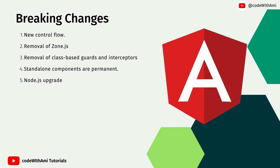The Node.js upgrade to 18.13.0 is also kind of a huge change. Node.js deprecated many things in previous versions, and if you are using any package that depends on previous Angular versions, those packages may have issues in Angular 17 — until they are updated to support version 17. That can create a big issue. So these are the breaking changes we have in Angular 17.